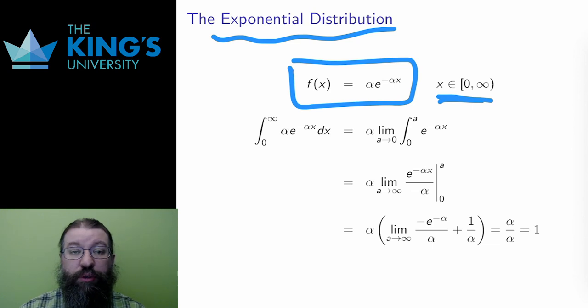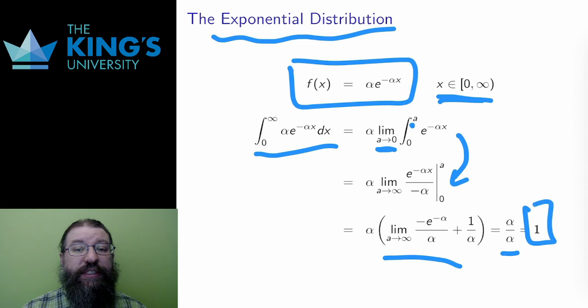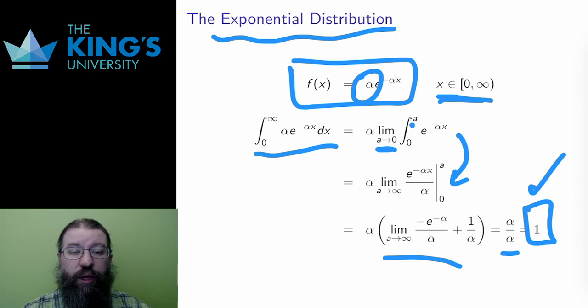First, let me check that this is a distribution by checking the integral condition. This is an improper integral, so I set it up as a limit as a goes to infinity. The antiderivative is e to the negative alpha x divided by negative alpha, which I evaluate on the bounds and take the limit, and the result is indeed 1. I needed to have the alpha out front to make this happen.